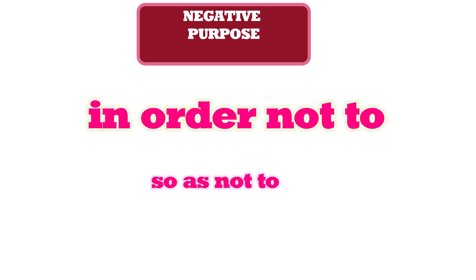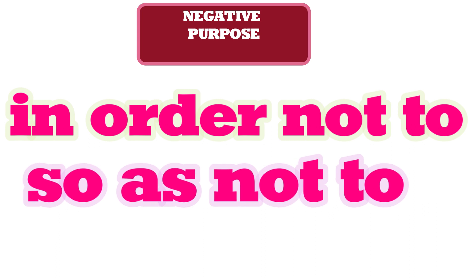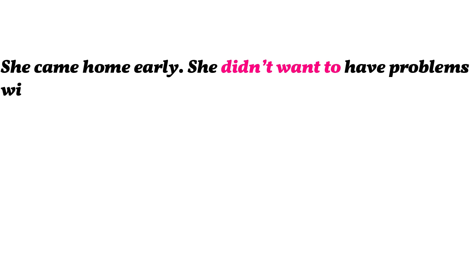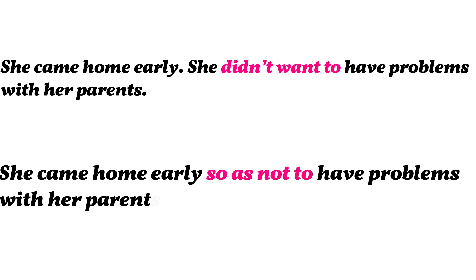For negative purpose, we use 'in order not to' or 'so as not to'. Remember: 'not' is placed before 'to'. Consider this example: she came home early — she didn't want to have problems with her parents. We join by saying: 'She came home early so as not to have problems with her parents.' We drop 'she didn't want to' and use the expression of purpose 'so as not to'.